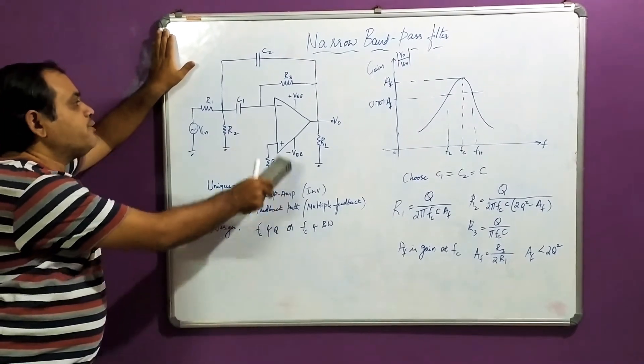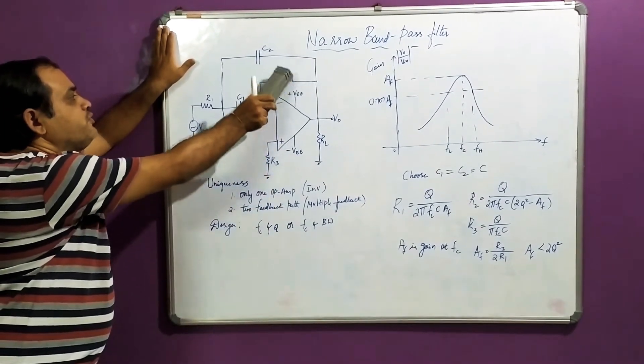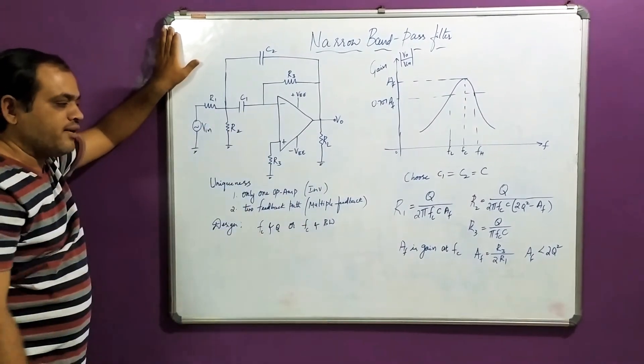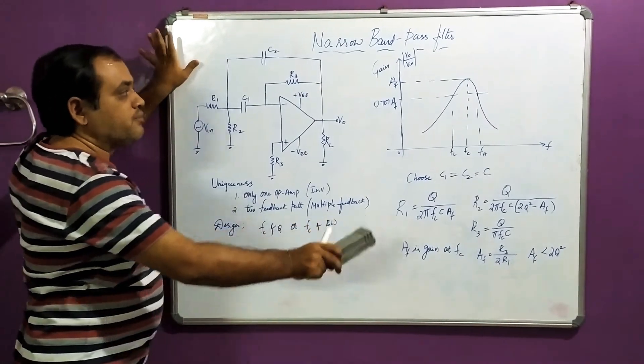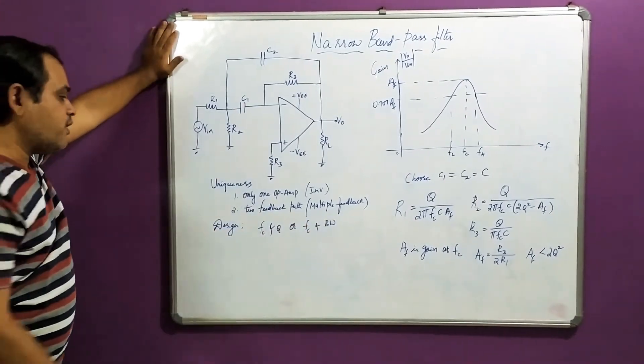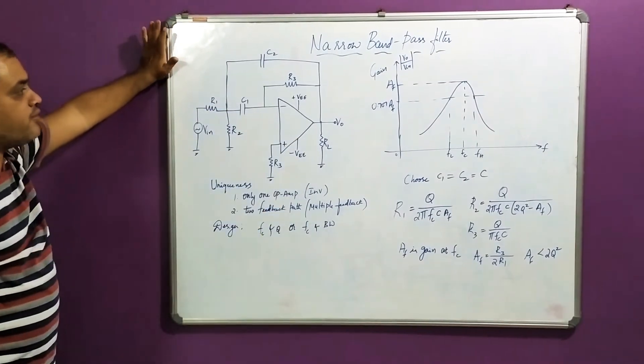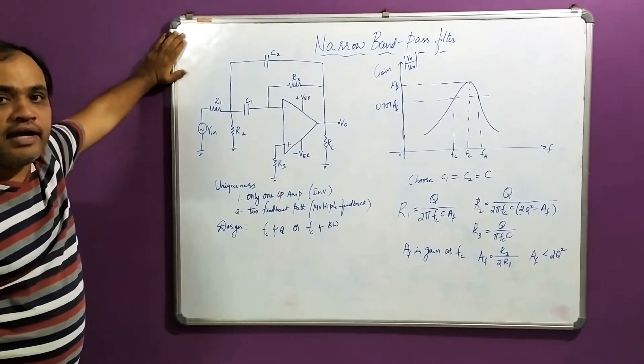It has two feedback paths. You can observe there are two feedback paths in the circuit diagram, making it become a filter. Another name is multiple feedback filter. Now let us see this particular concept of what happens for narrow band pass filter.